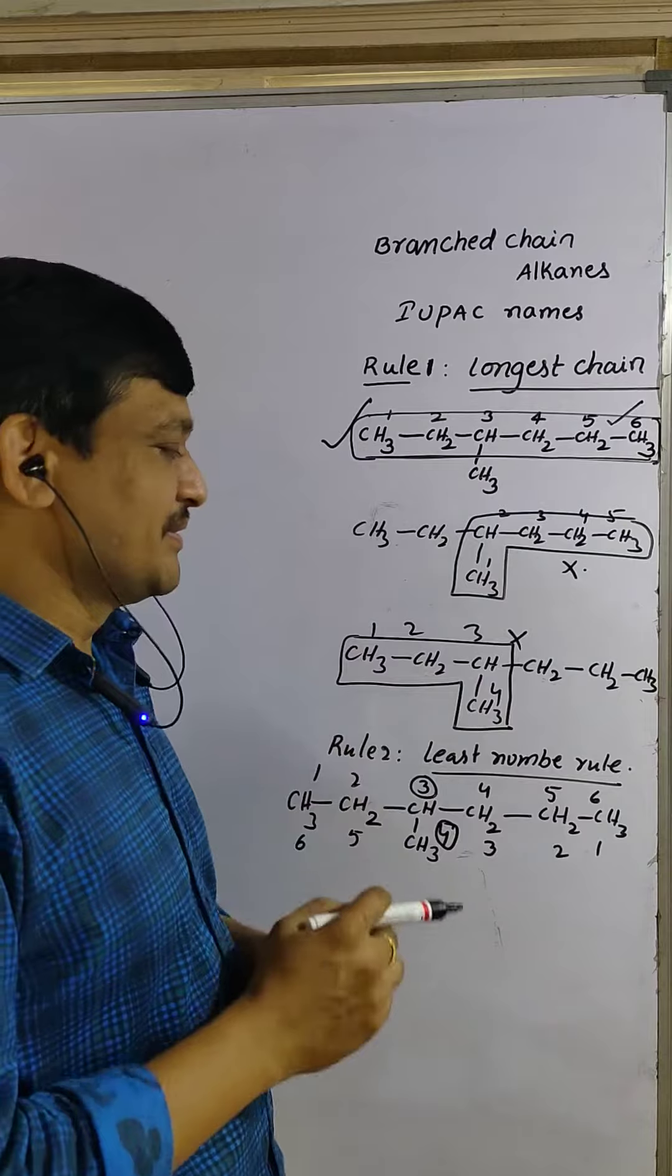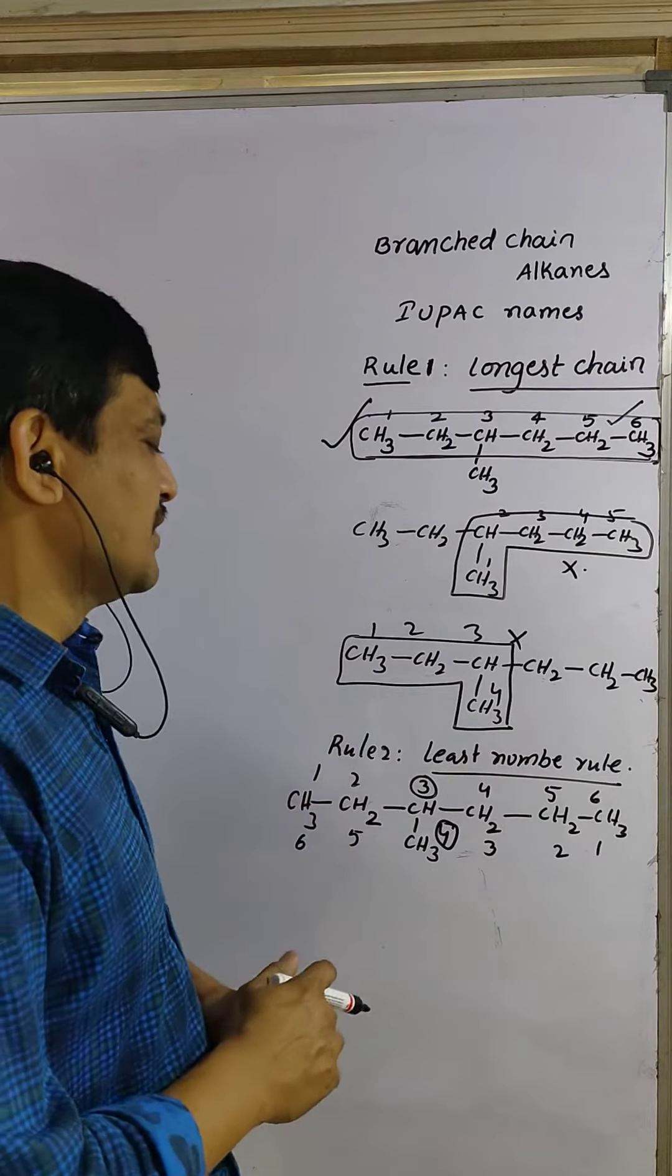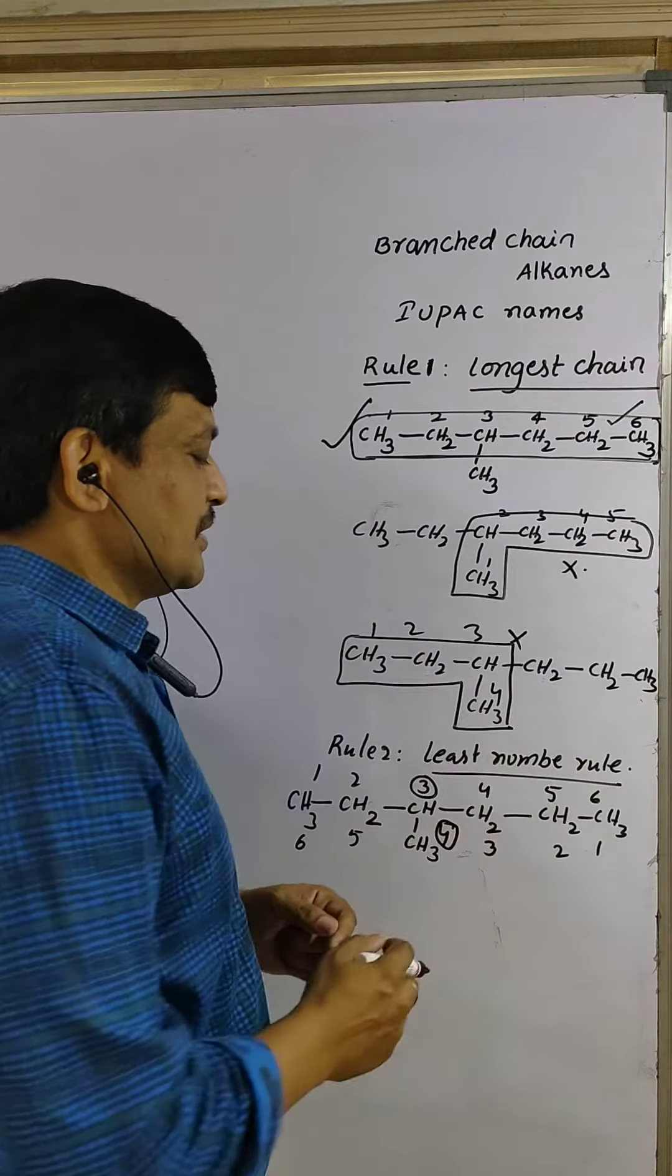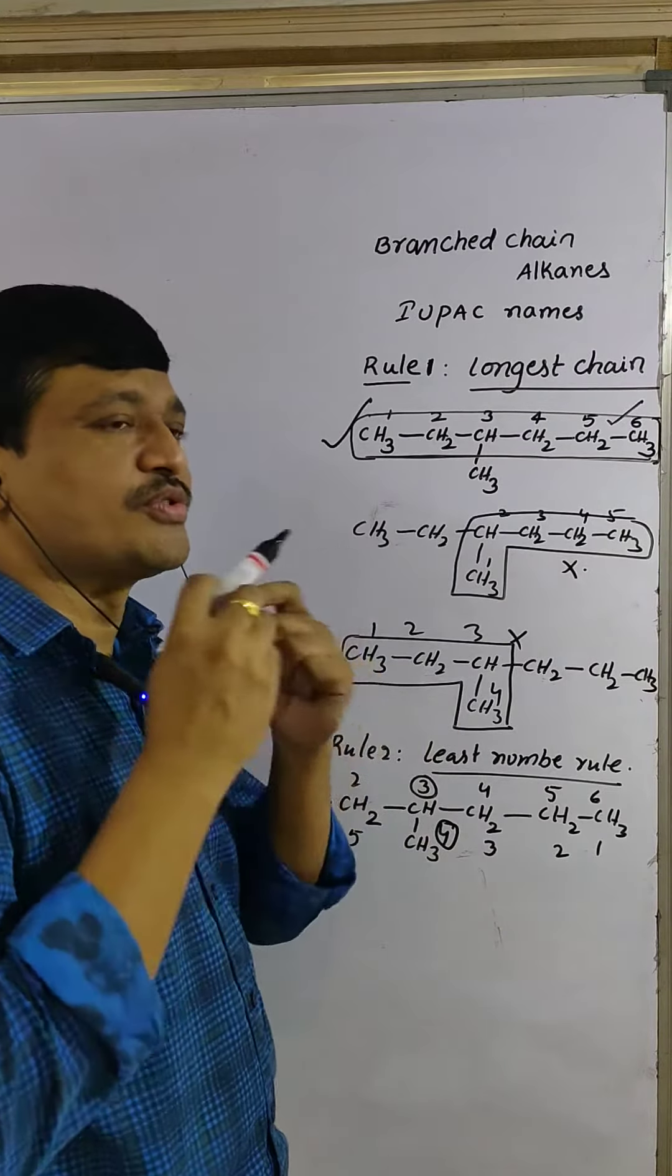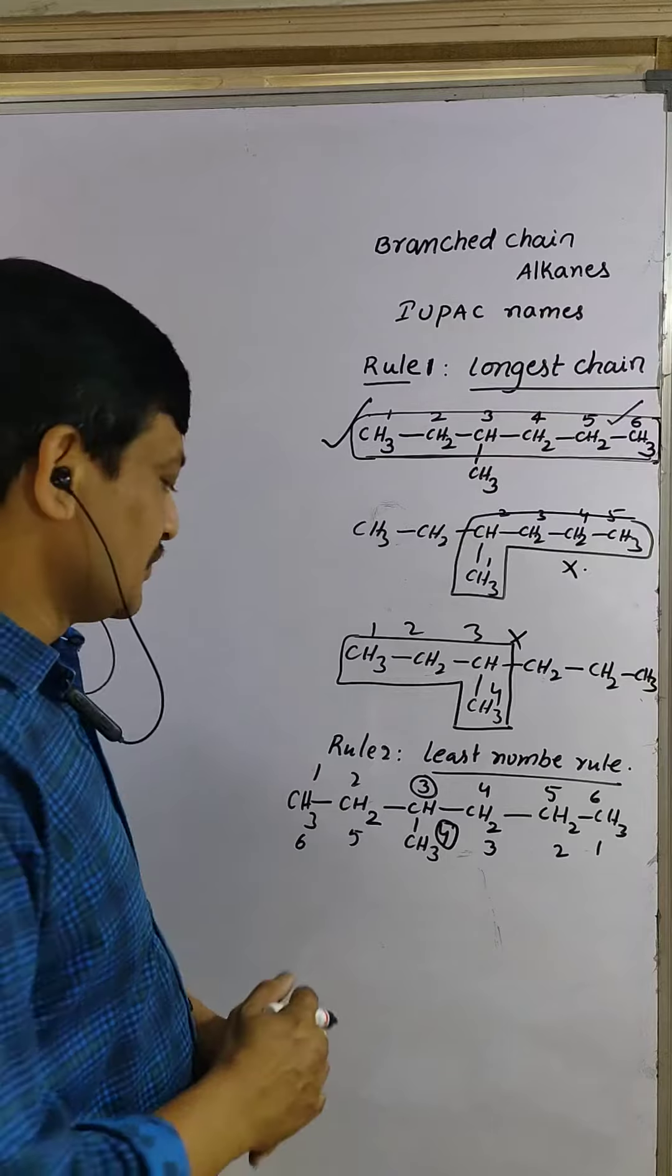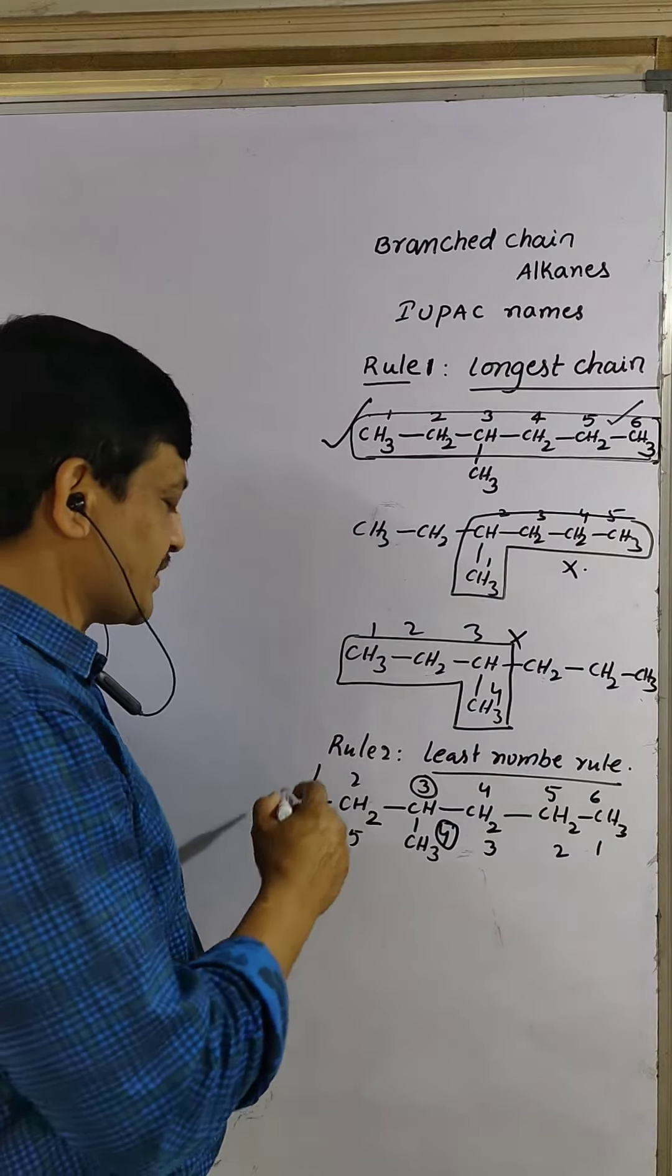And next, very important rule, least number rule. For substituents, we have to give the least number to substituents. So here two different ways are there.